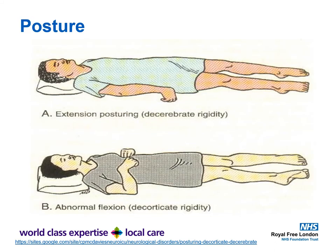This slide shows what posturing looks like when we talk about decerebrate and decorticate posturing. In extension posturing — decerebrate — the hands are straight and curved. In flexion posturing — decorticate — the elbows are flexed and the fingers are flexed; this is known as decorticate rigidity.